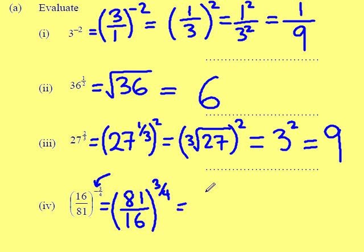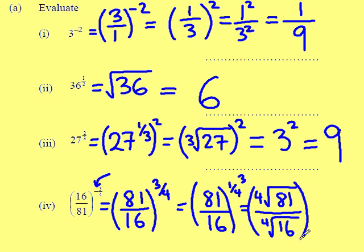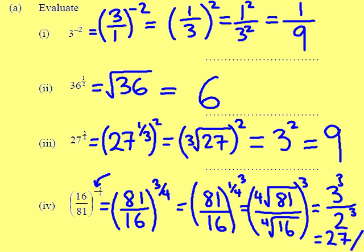The power of a quarter means the fourth root of 81 divided by the fourth root of 16, and then I've got to cube that. The fourth root of 81 is 3, and I've got to cube it, divided by the fourth root of 16 which is 2, which I also have to cube. That leaves me with the final answer of 27 over 8.